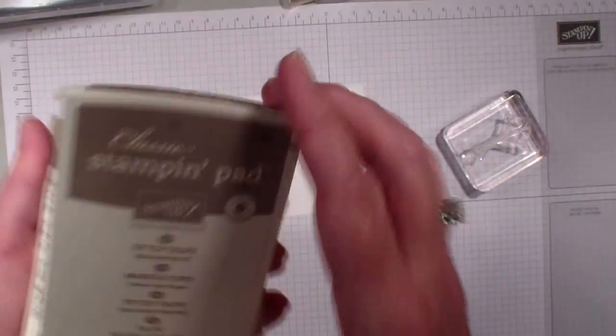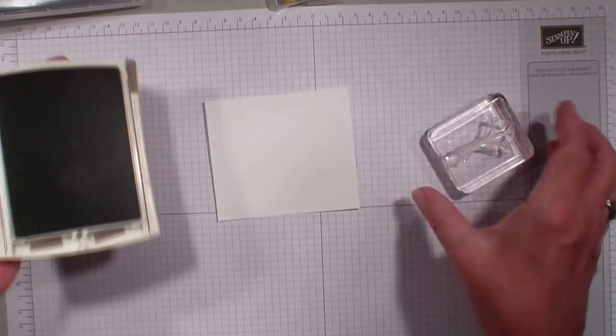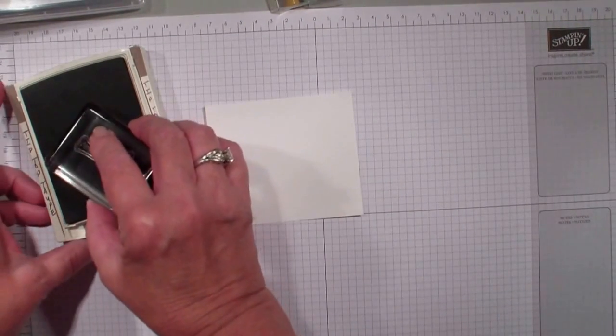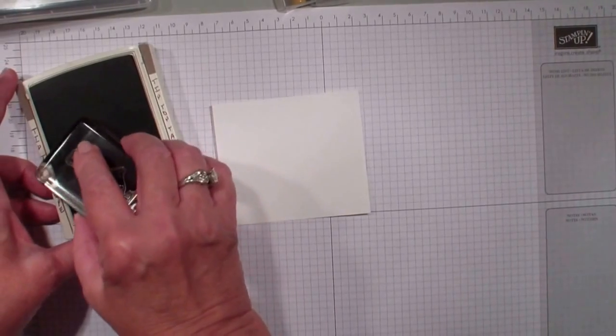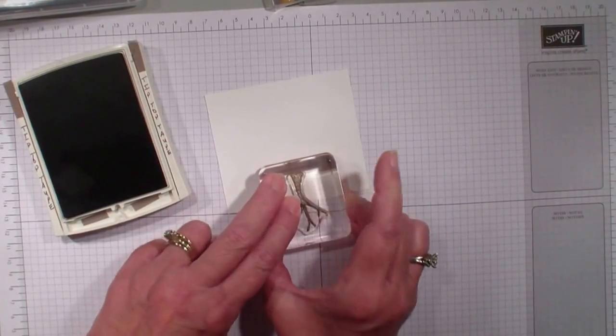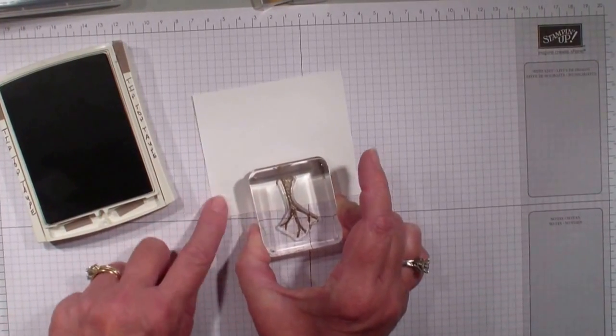So I am going to take my Tip Top Taupe. Now that is a mouthful. I am going to take that tree, I am going to ink it up and I am going to stamp it upside down. So you see the tree is upside down.